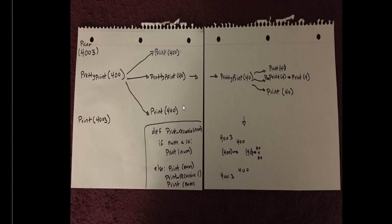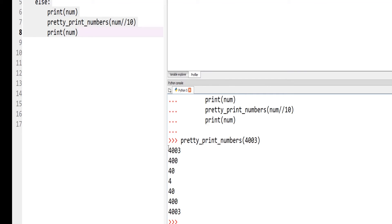We take all of that and jam it in between the two print 4003s to get the final output: 4003, 400, 40, 4, 40, 400, 4003. You can see it's 4003, then 400, then 40, 4, 40 — the outcome of pretty print 40 — sandwiched by the two 400s, and all of that sandwiched by the two 4003s.